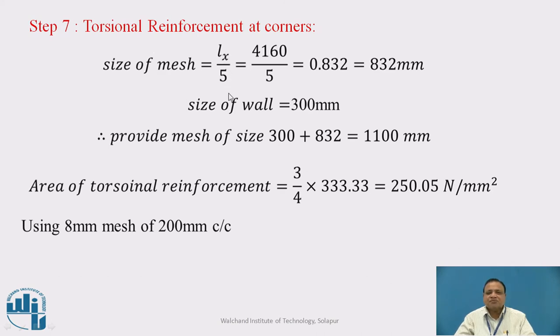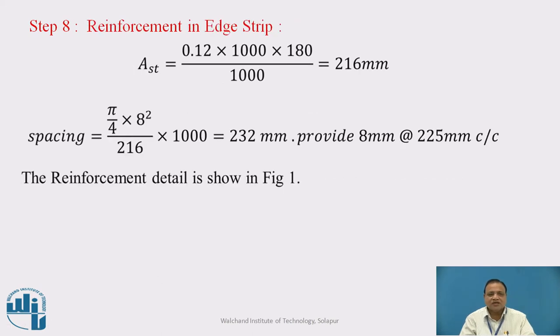Step 7: Provide torsional reinforcement at corner. The size is Lx by 5, 4160 divided by 5 works out to be 832 mm. Add wall width of 300 mm, so 300 plus 832 equals 1132 mm. Area of torsional reinforcement is three-fourth of area of steel in X direction, 3/4 times 333.33 equals 250.01. Using 8 mm mesh, spacing is 200 mm center to center.